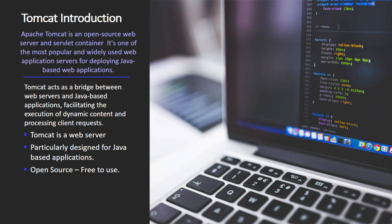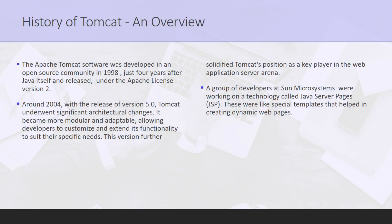Now let's discuss the history of Apache Tomcat. Apache Tomcat was developed in an open source community in 1998, just four years after the Java language itself was released. It comes under the Apache License Version 2. Initially it was a part of the Apache server project, but in 1999 it became its own project under the Apache Software Foundation. Over time, Tomcat grew and became more powerful, helping websites handle lots of visitors and run applications efficiently.